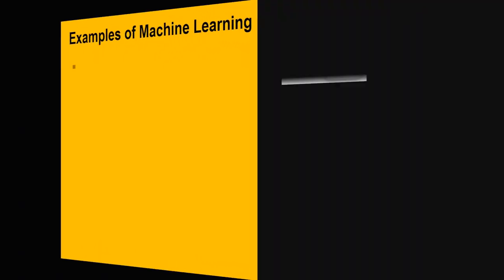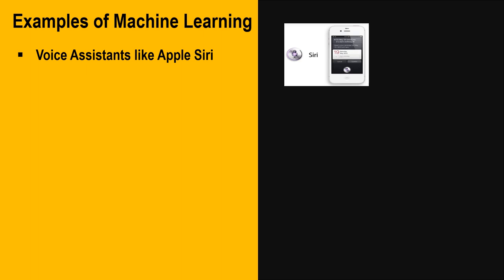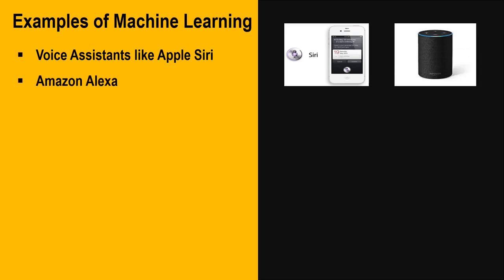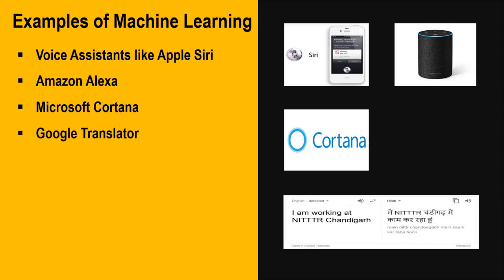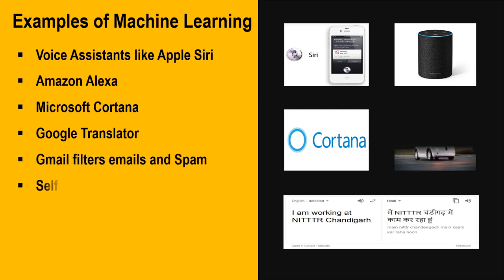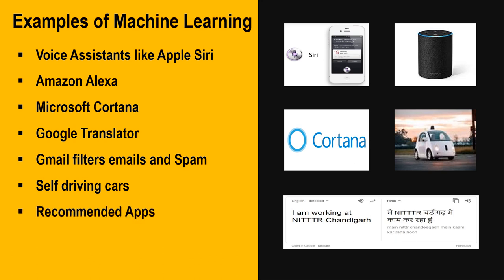We can say that Apple Siri — we say 'Siri, what is the time?' and we get the answer. Similarly, Amazon Alexa performs many duties as required. Microsoft Cortana, Google Translate — for example, if you write 'I am working at NIIT Chandigarh,' it will automatically be translated into Hindi or other languages. Self-driving cars and recommended apps are also examples of machine learning.